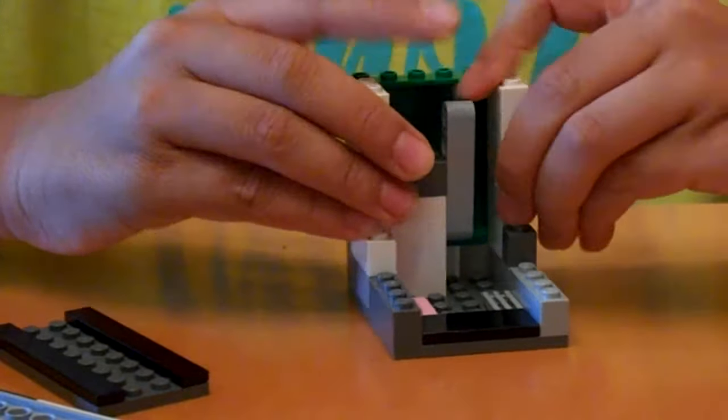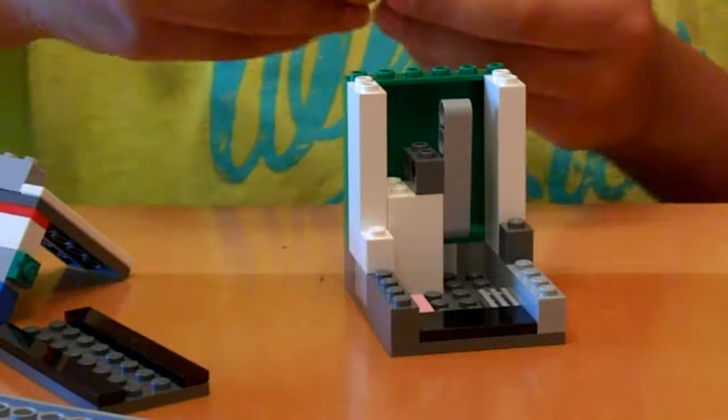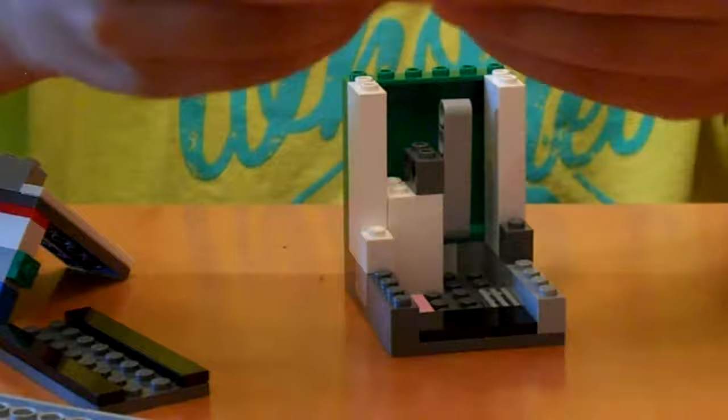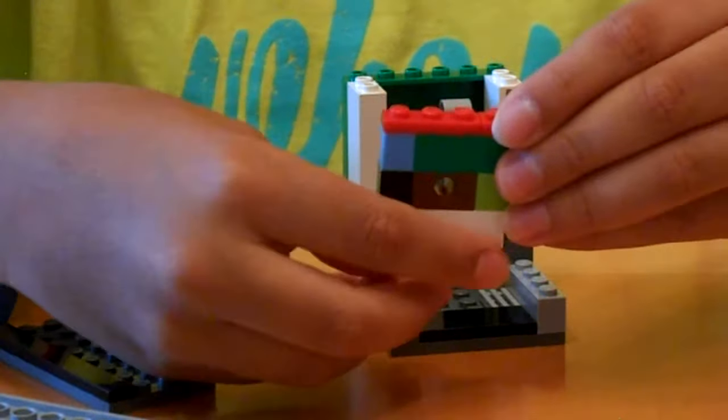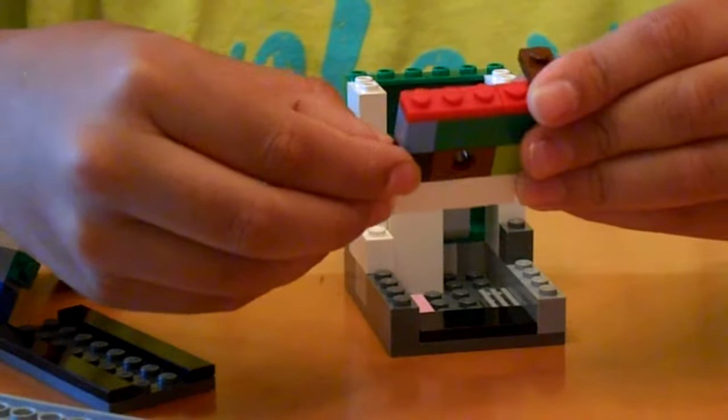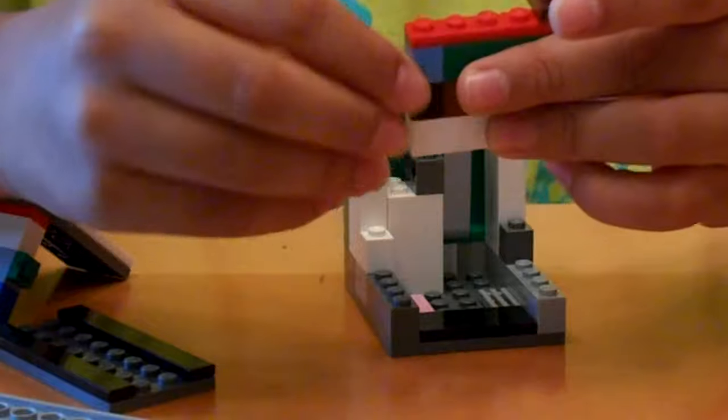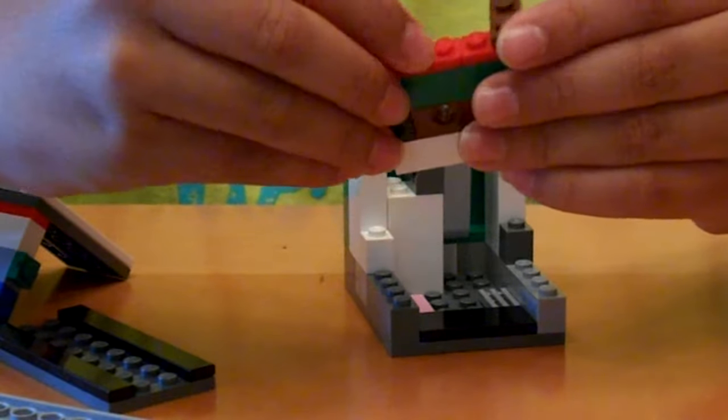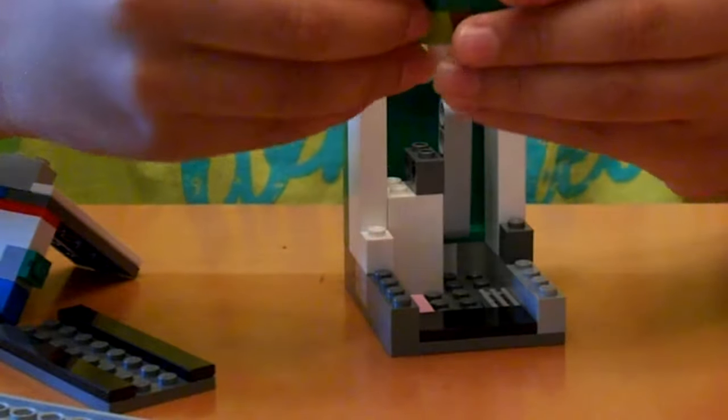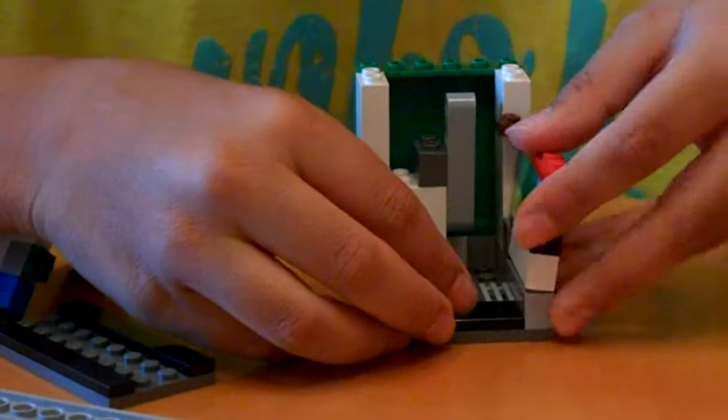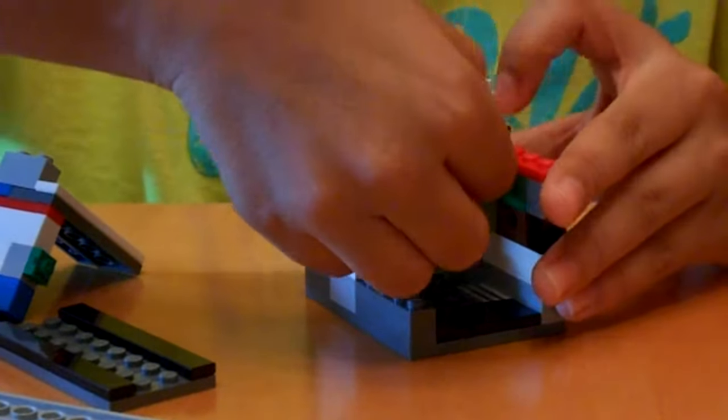Then you're going to make walls. So you want a 1x4, a 1x4, a 1x1, 2x2, 1x4, 1x1, and some flats. At the top, this is a 1x2. Then you're going to place them right there. So it's going to fit, this one 2x2 goes right there.